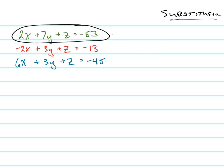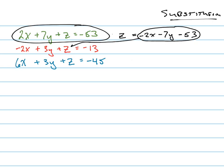We're going to solve this equation — it doesn't really matter which, but let's solve it for z because that'll be easier. So z equals negative two x minus seven y minus fifty-three. Make sure you don't make any mistakes. We're going to plug that in for z right here.